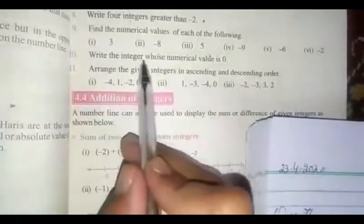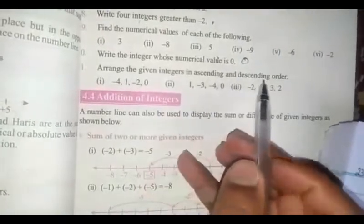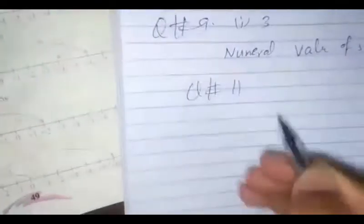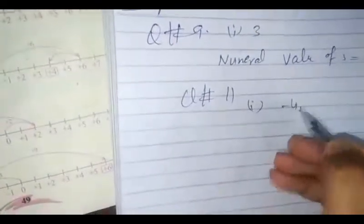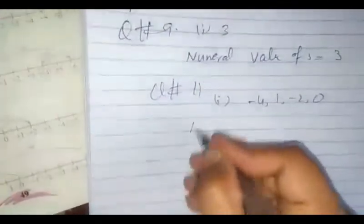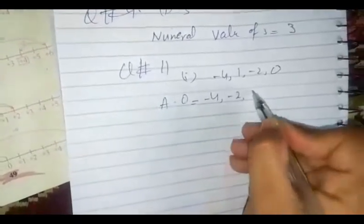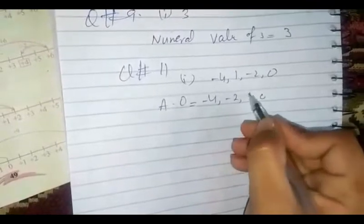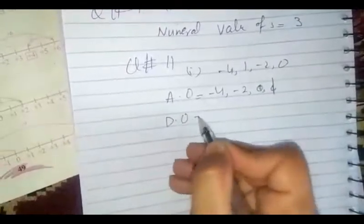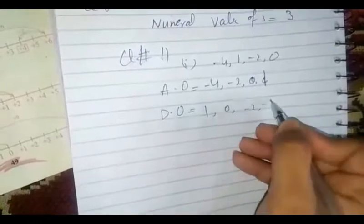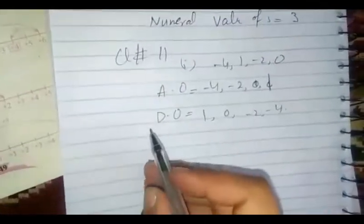Question number 10: write the integer whose numerical value is 0. The answer is 0. Question number 11: arrange the given integers in ascending and descending order. Ascending means from smaller to larger, and descending means from larger to smaller. For the first part — minus 4, 1, minus 2, 0 — in ascending order we start from the smallest: minus 4, minus 2, 0, 1. In descending order we start with the greatest: 1, 0, minus 2, minus 4. Similarly, you have to do the remaining parts by yourself.